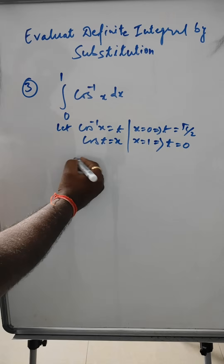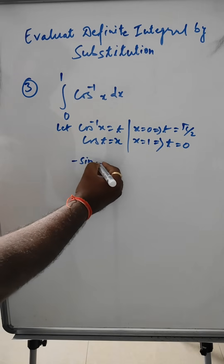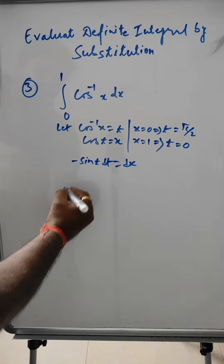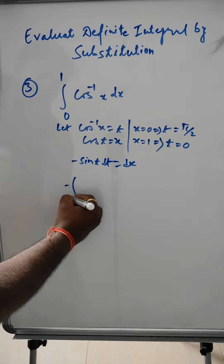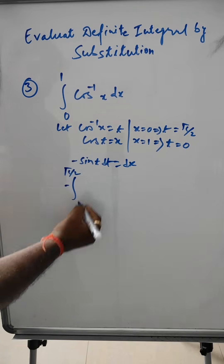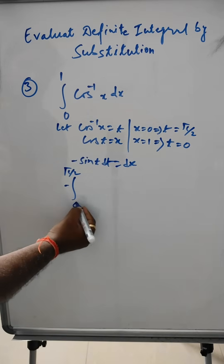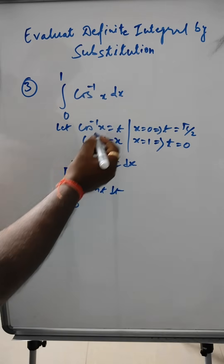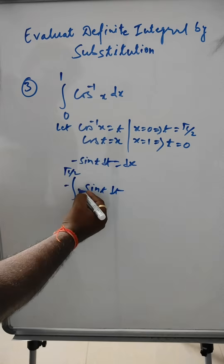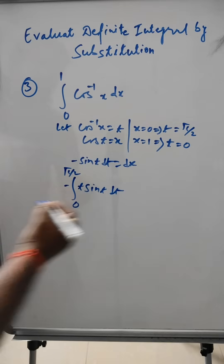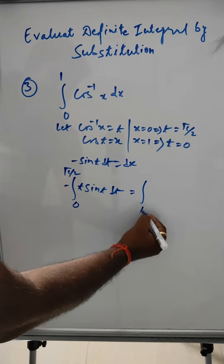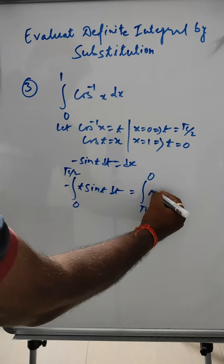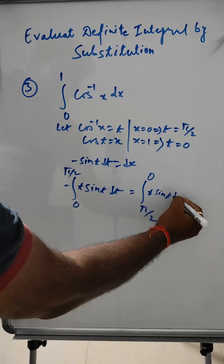Differentiating x = cos t gives dx = -sin t dt. So the integral becomes ∫ from π/2 to 0 of t(-sin t) dt, which we rewrite as ∫ from 0 to π/2 of t·sin t dt by flipping limits and changing minus to plus.